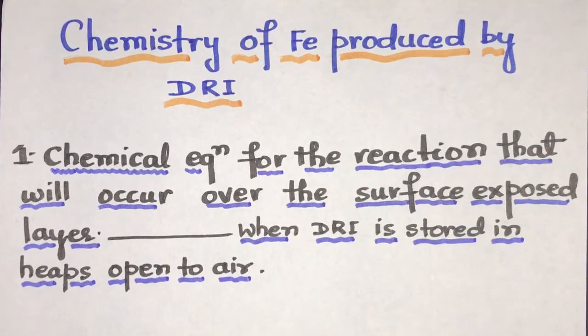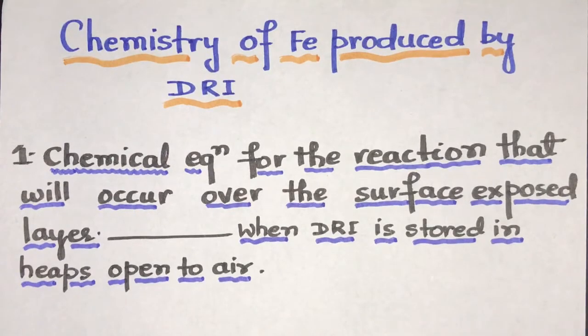As we know that iron produced by DRI process is a very low density porous lump material. It has high surface area and it is more reactive than the bulk iron due to its high surface area. As we know that if the surface area increases, the surface energy also increases and the reaction rate increases.